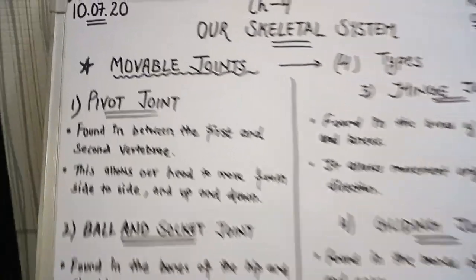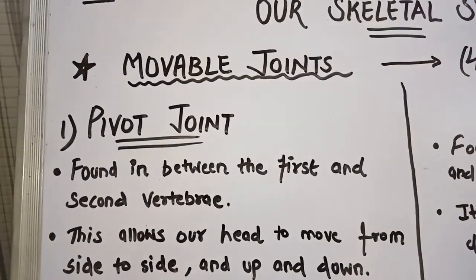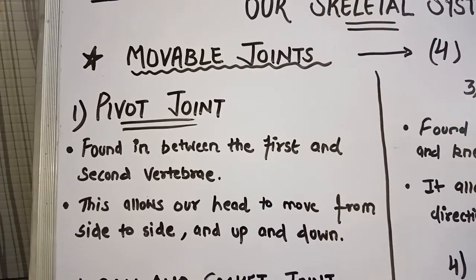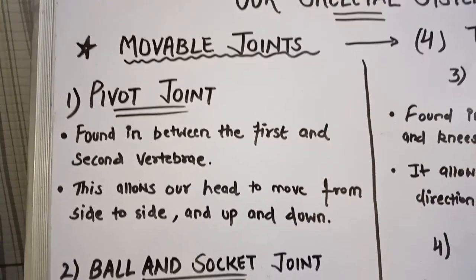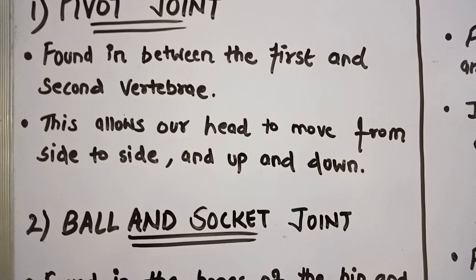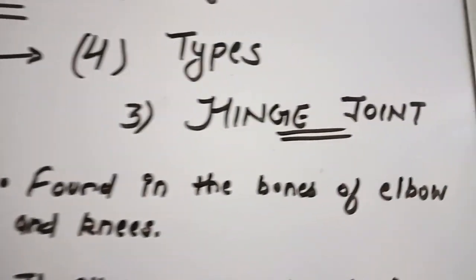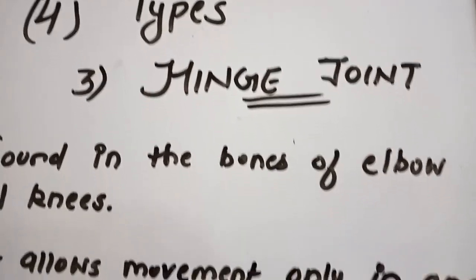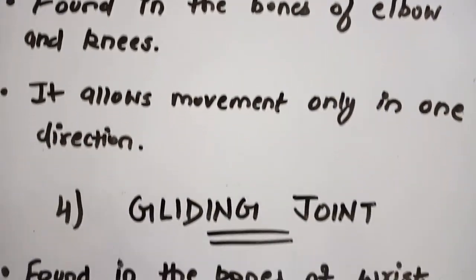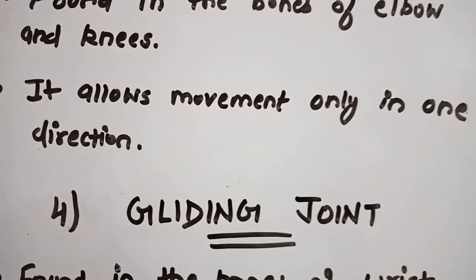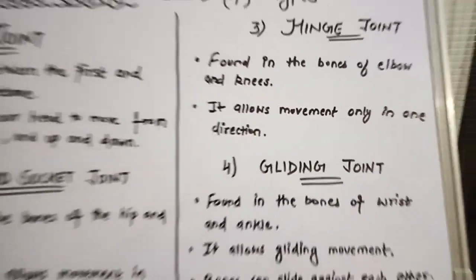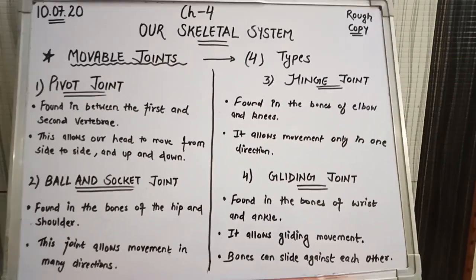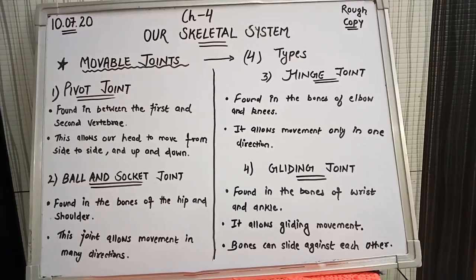Chapter 4: Our Skeletal System. Today we will learn about movable joints and their types. The first joint is the pivot joint, the second one is the ball and socket joint, the third one is the hinge joint, and the fourth one is the gliding joint.